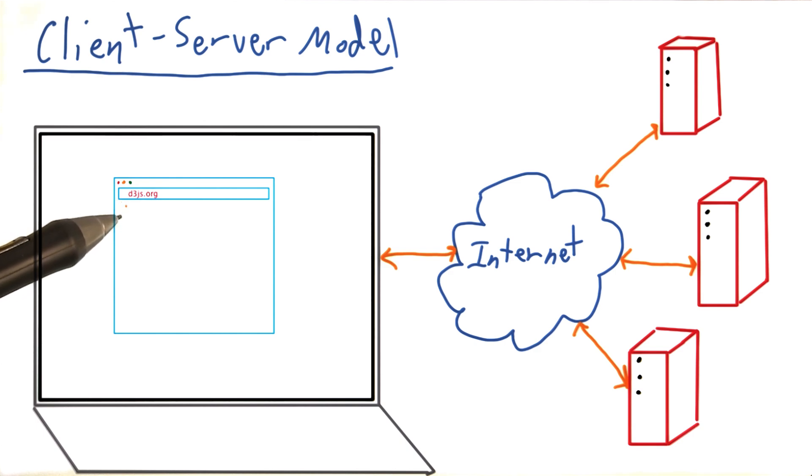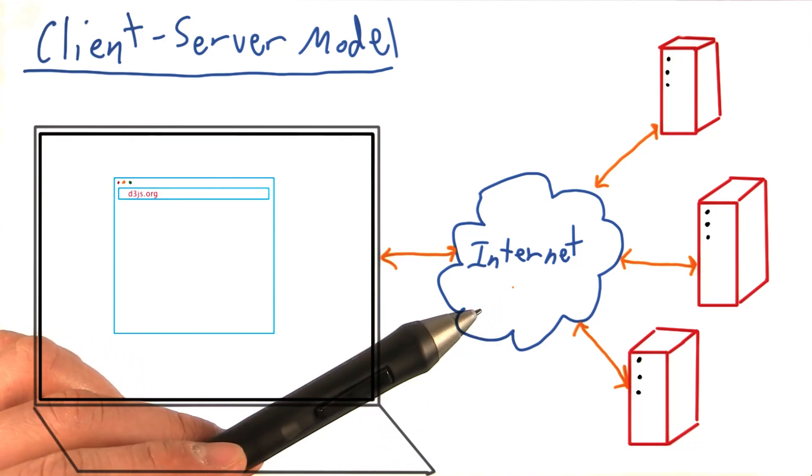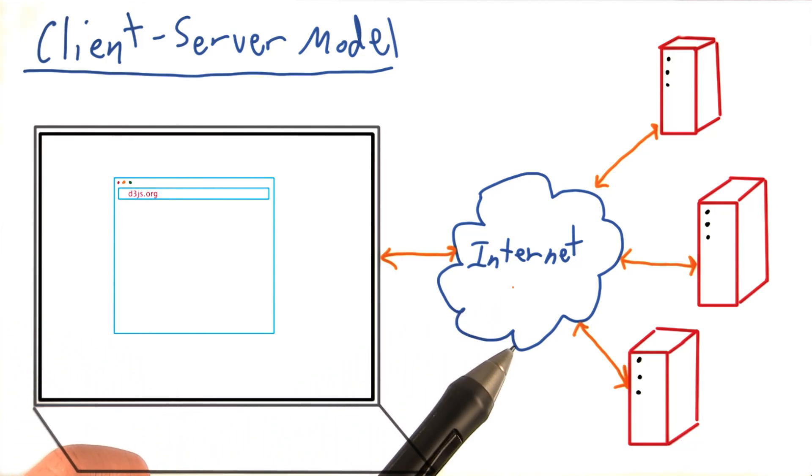When you type the address into your browser, represented here by the blue square, the web browser is local on your laptop and needs to send a request out to the internet, asking for the HTML of the D3JS home page.